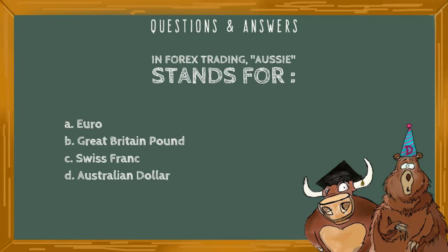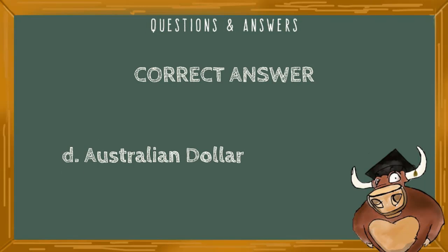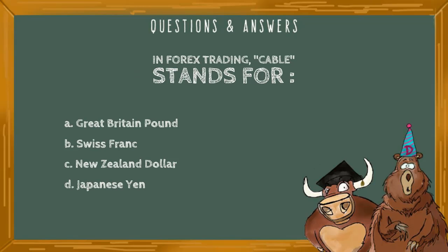Welcome back to questions and answers in forex trading. 'Aussie' stands for: A) Euro, B) Great Britain Pound, C) Swiss franc, or D) the Australian dollar. The wrong answers include A) Euro, B) Great Britain Pound, and C) Swiss franc. The correct answer of course is D, the Australian dollar.